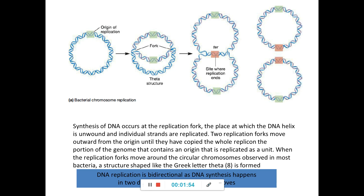When the replication forks move around the circular chromosome, a theta-shaped structure is formed — this is referred to as the theta model. When the replication fork meets at the ter site, replication ends. So during replication of the bacterial chromosome, you find a structure in the shape of a theta, and this is the theta model of DNA replication.